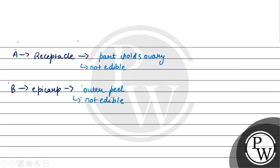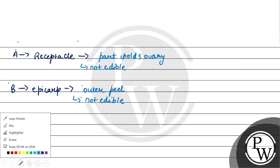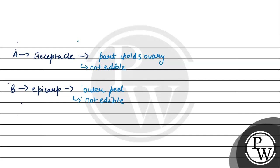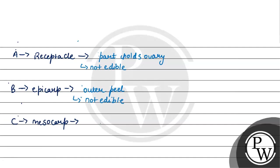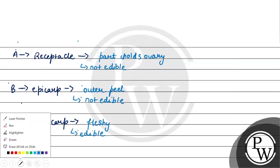After that we have option C, which is mesocarp. Mesocarp is the middlemost layer of pericarp, and in mango the mesocarp is a fleshy, pulpy structure which is edible. So this is the part of mango that we eat.